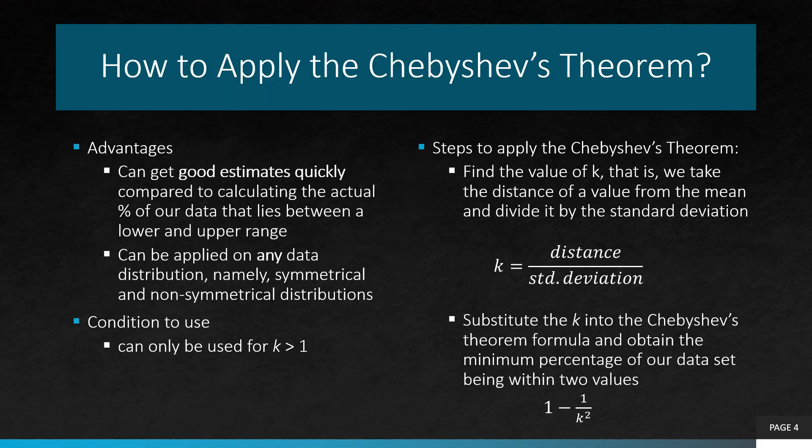Before learning how to apply Chebyshev's theorem, it might be a good idea to see the advantages of using it. As mentioned before, one advantage of using Chebyshev's theorem is that we can get good estimates rather quickly compared to calculating the actual percentage of our data that lies between two values. Another advantage of this theorem is that it can be applied to any data set, meaning we can use this theorem not only for a symmetrical distribution but also for non-symmetrical ones.